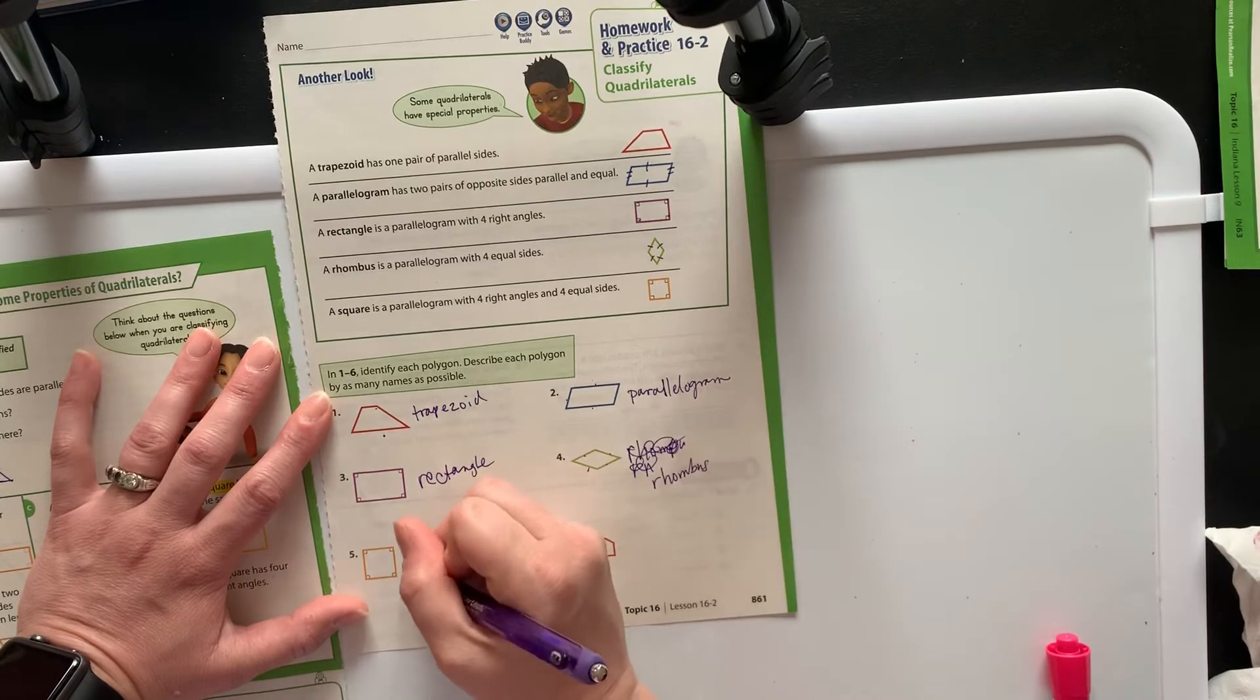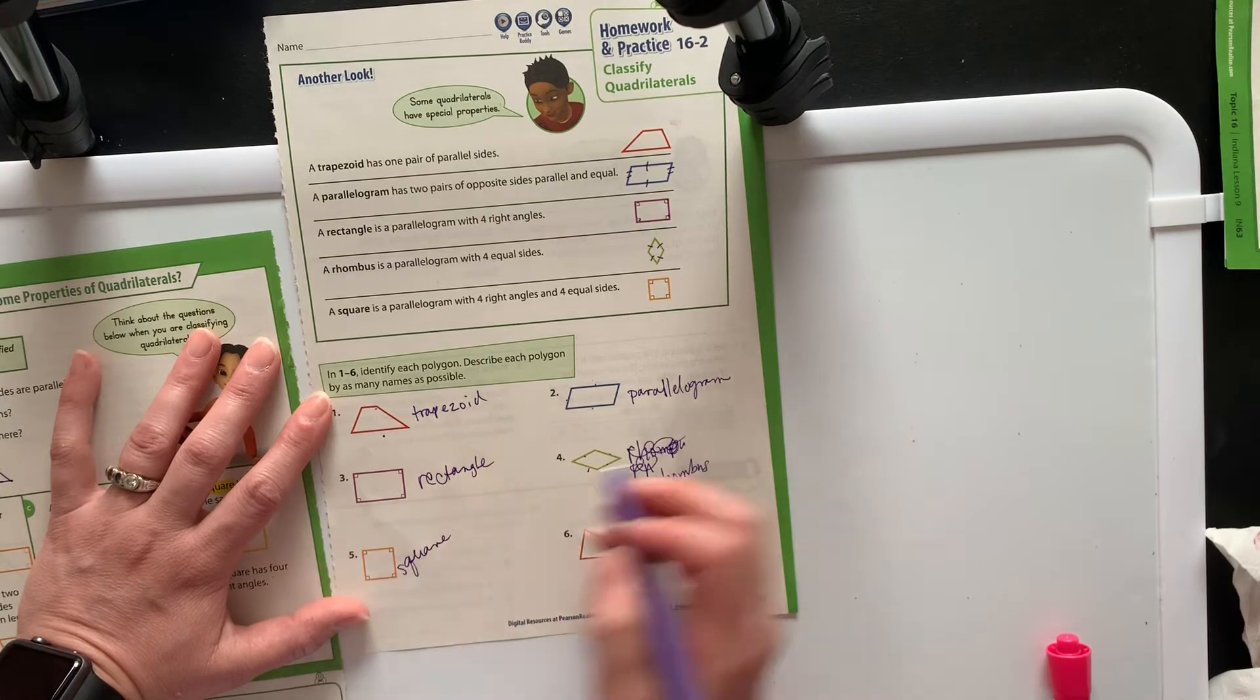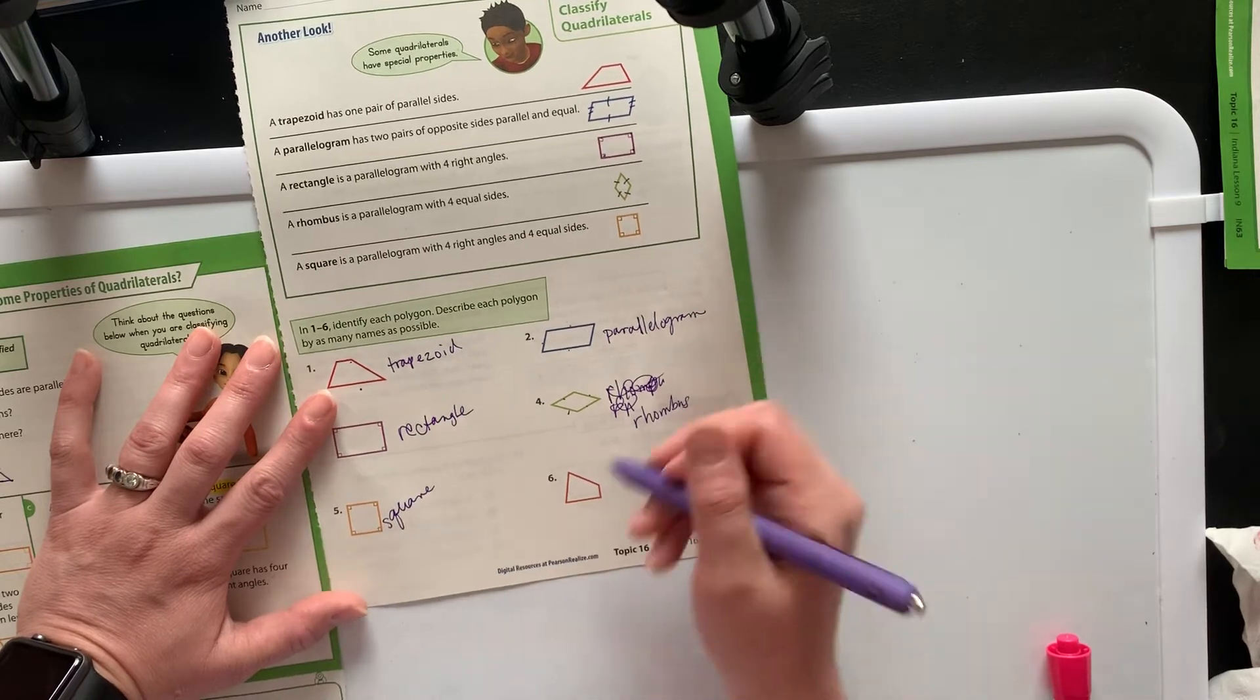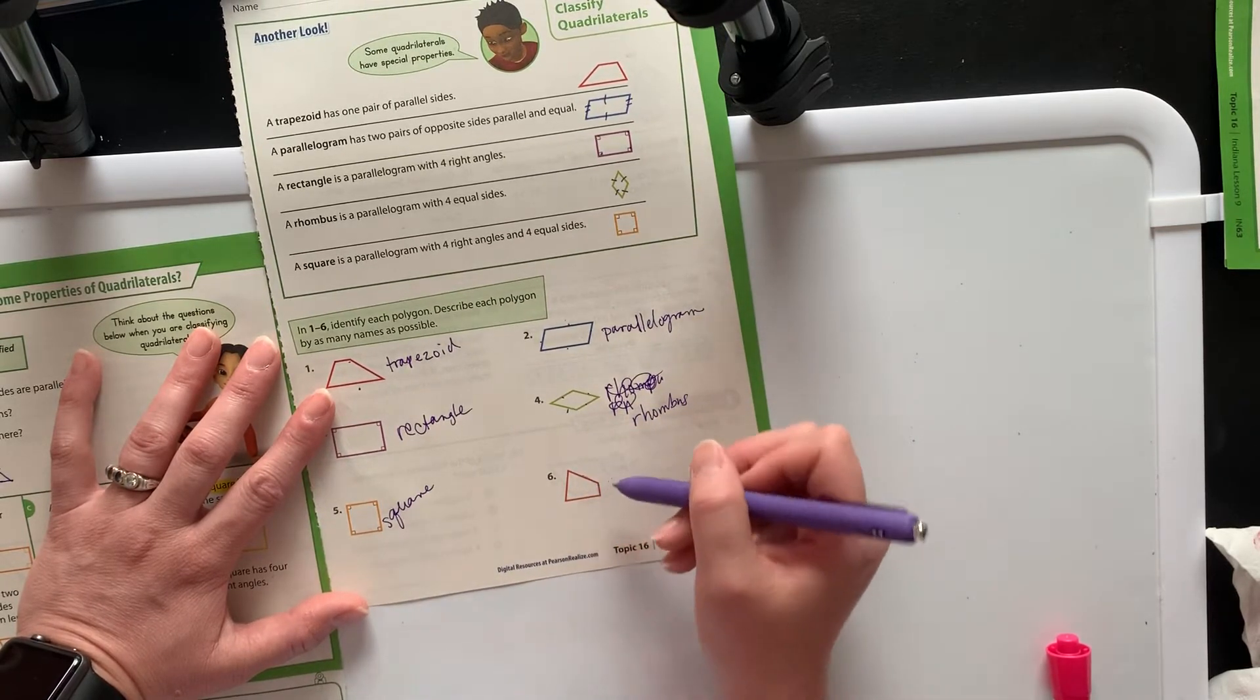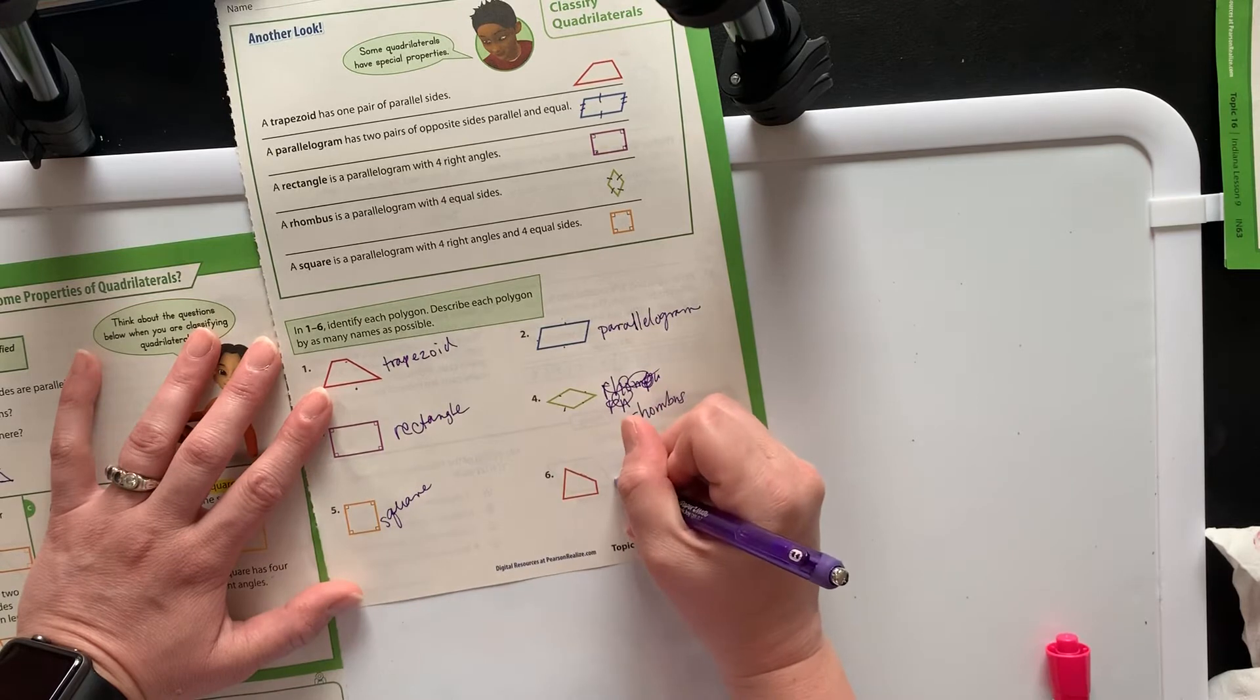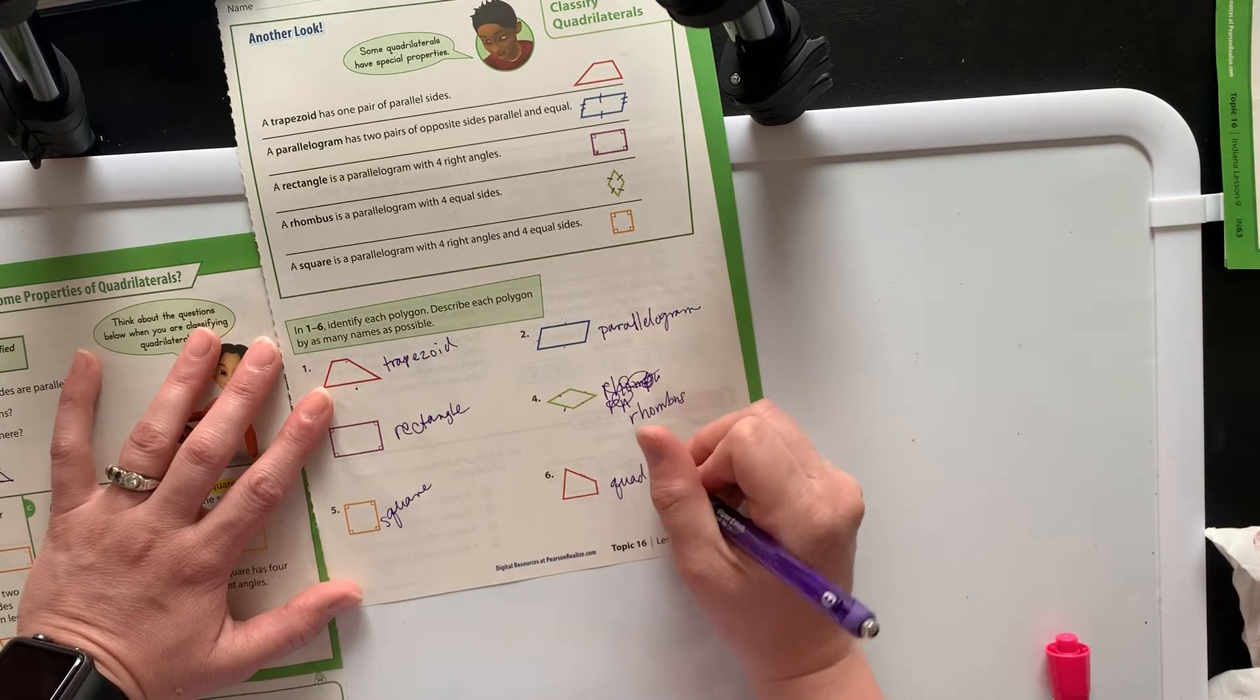Here we have a square because we have four right angles and four sides the same length. All sides are parallel to each other. And then this little guy right here would just be a quadrilateral because I don't see any parallel lines. This line is not parallel to this line, this line is not parallel to this line, nobody's the same length. So this is just a plain old-fashioned quadrilateral.